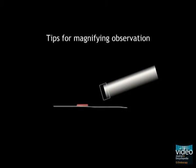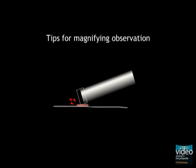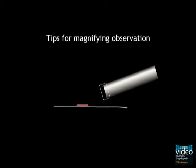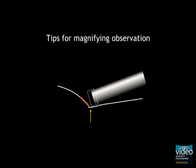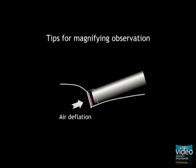To perform magnifying observation, get close to the object. When too much air is inflated, mucosa is extended and flattens, so it can be slippery and can cause contact bleeding. Put the tip of the cap on the proximal mucosa to the lesion and deflate the air to make the mucosa soften and to get close to the lesion.